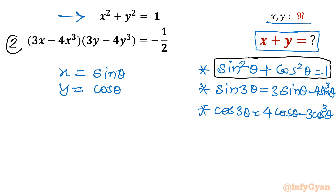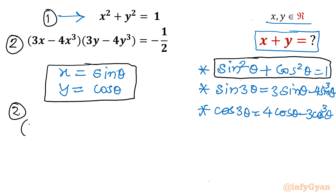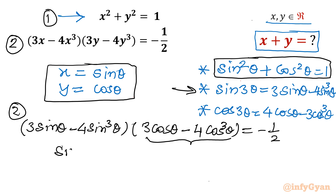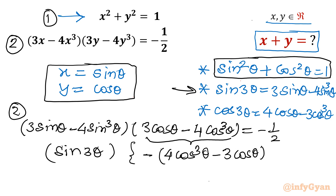Now come to equation number 2. After substitution, I will write in the first bracket (3 sin theta minus 4 sin cubed theta), which is identity number 2, the sin 3-theta formula. The second bracket gives (3 cos theta minus 4 cos cubed theta), equal to negative one half. I will take minus common from the second bracket, so the first bracket is sin 3-theta, and the second bracket becomes minus(4 cos cubed theta minus 3 cos theta).